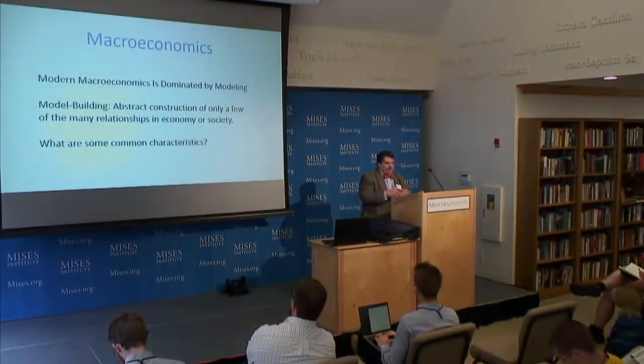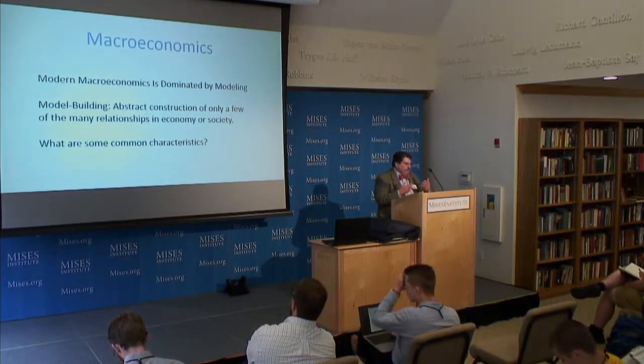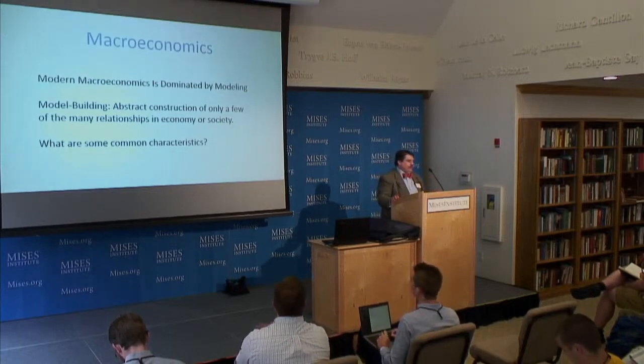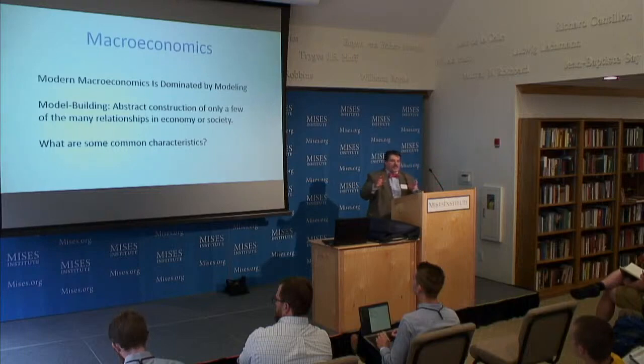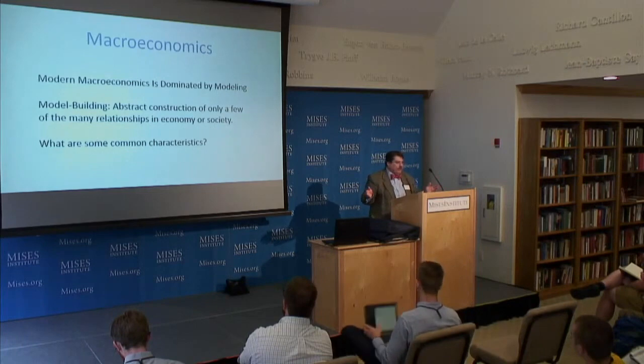Another characteristic of modern macro models is that money tends to affect the general level of prices, but changes in relative prices are not considered. Changes in relative prices only happen in the micro world according to these models. And macroeconomic models tend to focus on macroeconomic aggregates like GDP. The way models focus on aggregates prevents analysis of underlying microeconomic factors that can have significant effects for the entire social economy, such as malinvestment. So most modern macro modeling separates micro and macro into two hermetically sealed worlds.